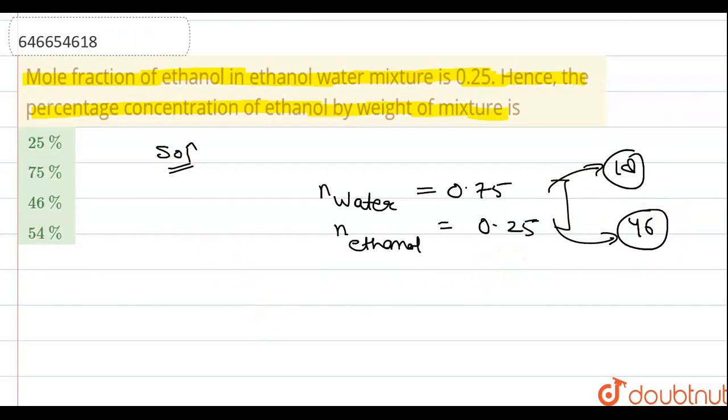Now I am calculating mass, masses of them correspondingly. Mass of ethanol is equal to 46 into 0.25, because moles into molar weight, that is 11.5 grams.